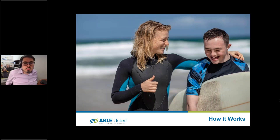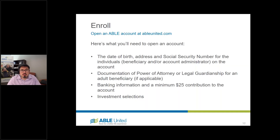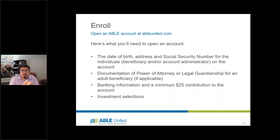How do you go about establishing an ABLE United account? Enrollment is done completely online at ableunited.com. We're through the state of Florida — we're not a financial institution or bank, so you can't go to a bank on the corner and enroll. The application process will ask for information such as the beneficiary's name, date of birth, address, and Social Security number. If you're doing it on behalf of somebody else, you'll need to submit authoritative documentation like a power of attorney or legal guardianship.